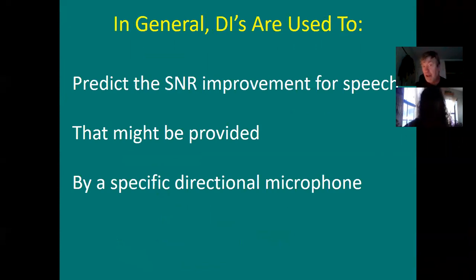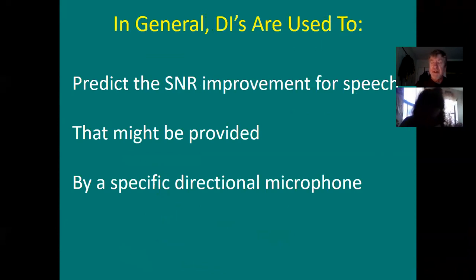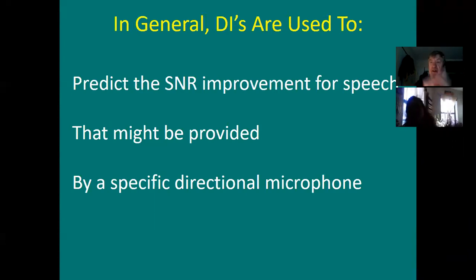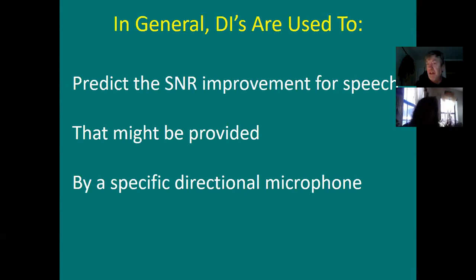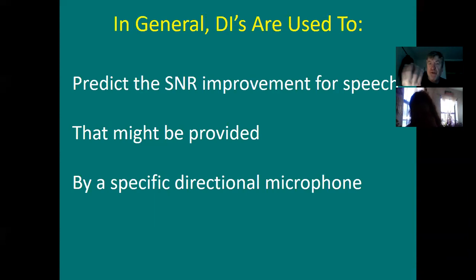Take the message home: you want to have good directionality for 500, 1000, 2000, and 4000 Hz. Directional indices are used to predict the signal-to-noise ratio improvement for speech provided by a specific directional mic. Chapter 9 in the textbook covers the benefits of directional mics versus digital noise reduction and puts it all together. Chapter 8 covers digital noise reduction, feedback reduction, and expansion.